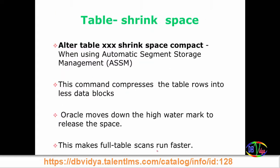This SHRINK SPACE COMPACT works most efficiently with ASSM — Automatic Segment Storage Management — which is DBA-related configuration. The command compresses table rows into fewer data blocks: for example, if you had 10 data blocks that were partially empty due to deletions, after shrinking you might have only five or six. It moves the high watermark down to release space, making full table scans faster. This clarifies why deleted data still causes slow queries — the high watermark was not reset.